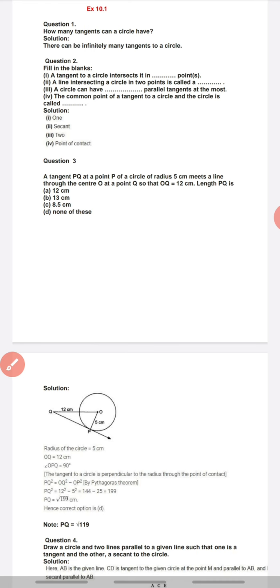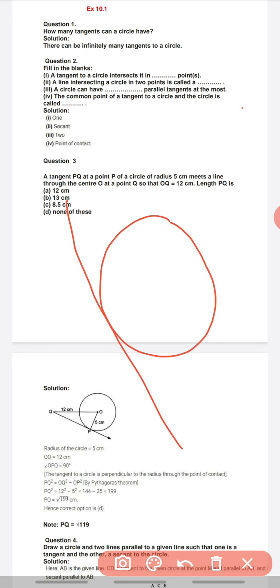Number third: A circle can have dash parallel tangents at the most. Agar aapke paas koi circle ho, we can draw infinite number of tangents, we know that. Now the question is, how many parallel tangents can we draw to this circle?